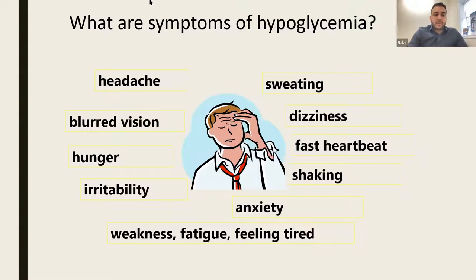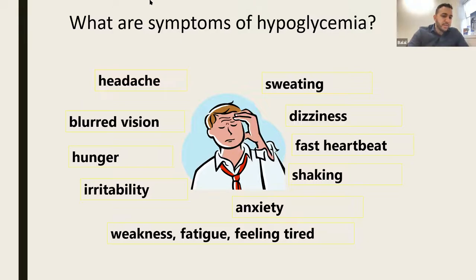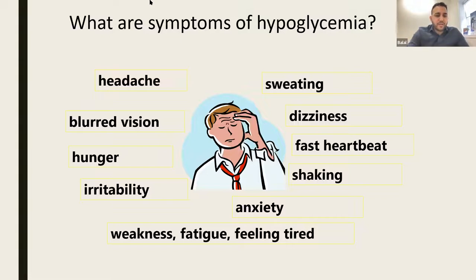Symptoms of hypoglycemia: if you've ever had a low blood sugar level, you know it's not comfortable. You feel blurry vision, hunger, and the biggest things people complain about are a fast heartbeat, shaking, dizziness, and feeling very weak and lethargic. If this happens during Ramadan, make sure you check your sugar levels and treat it immediately — break your fast and check your sugar again to make sure it comes up.